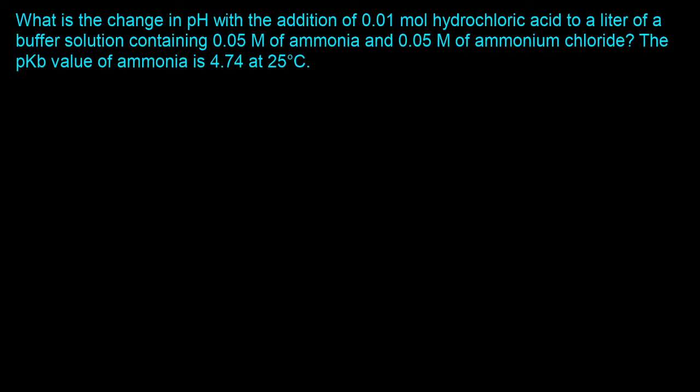Question 5: What is the change in pH with the addition of 0.01 mole of hydrochloric acid to a liter of a buffer solution containing 0.05 molar ammonia and 0.05 molar ammonium chloride? The pKb value of ammonia is 4.74 at 25°C. This is the first example where we have a weak base and the salt of the base, so we'll see how that changes the version of the equation we want to use.